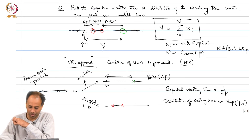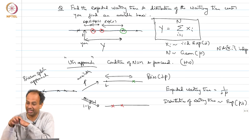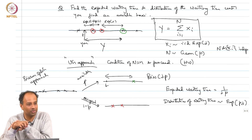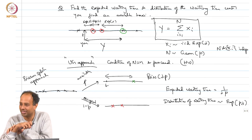Of course, you can prove it using conditioning on n equals little n, writing out the Erlang, and doing all that — you will still get the same answer.